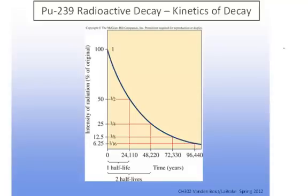This graph is a graph of the plutonium-239 isotope undergoing radioactive decay. You can see how the intensity of radiation changes with time. This is how we can take a look at the kinetics of a particular radioisotope.